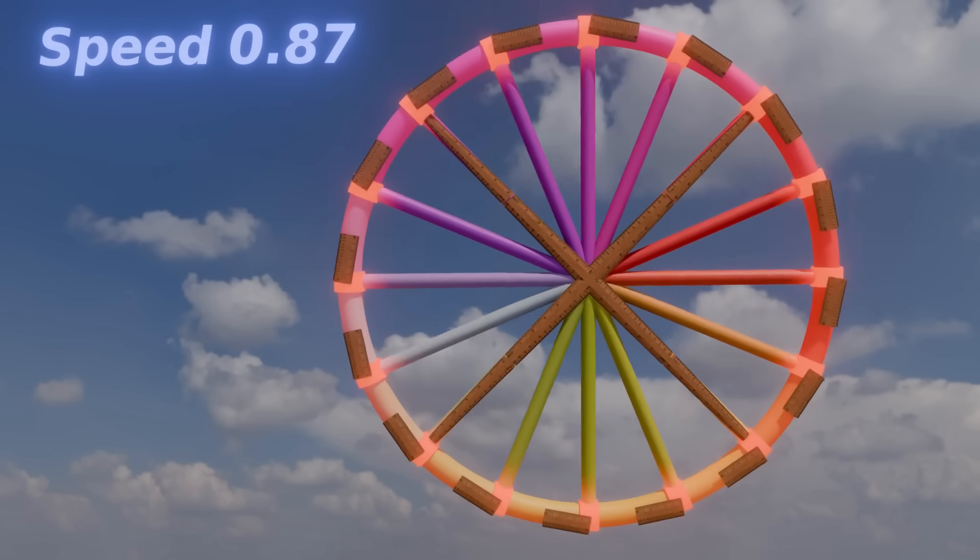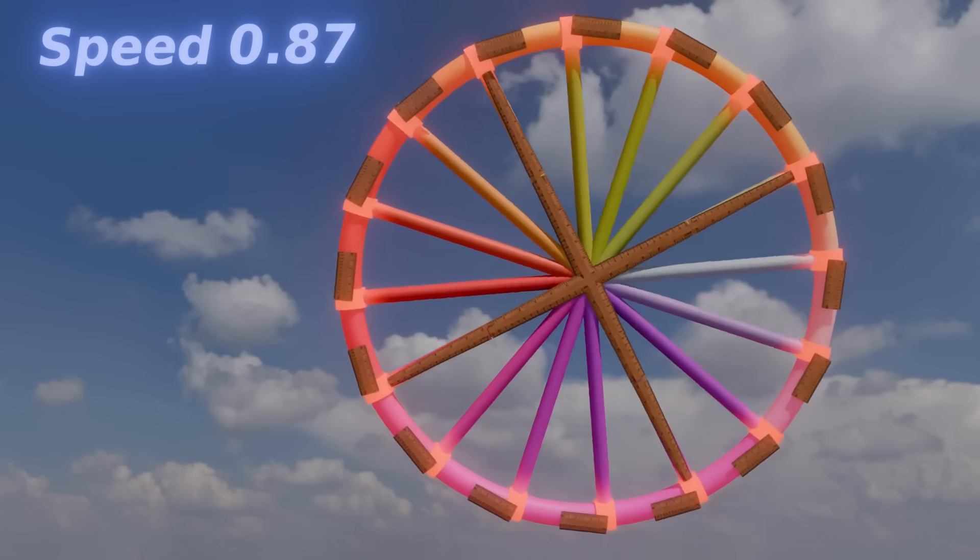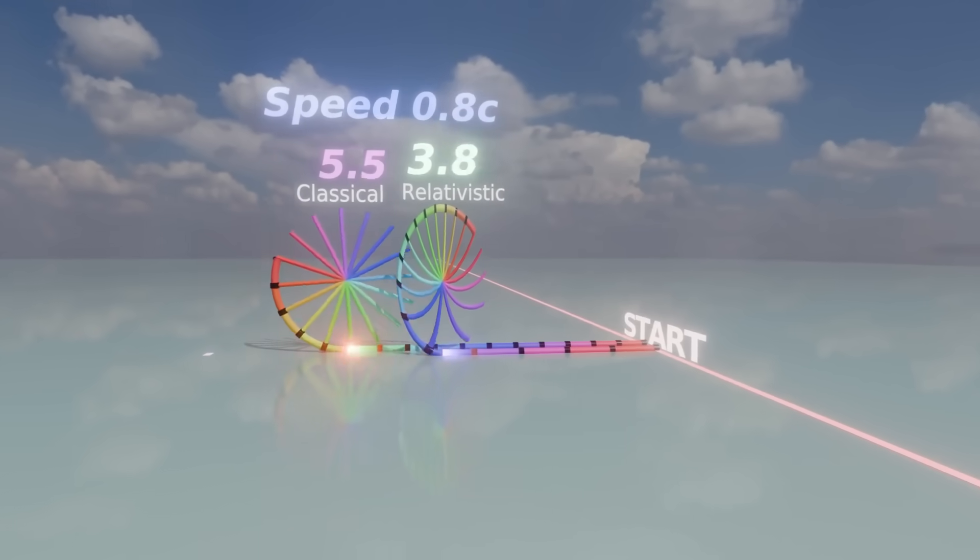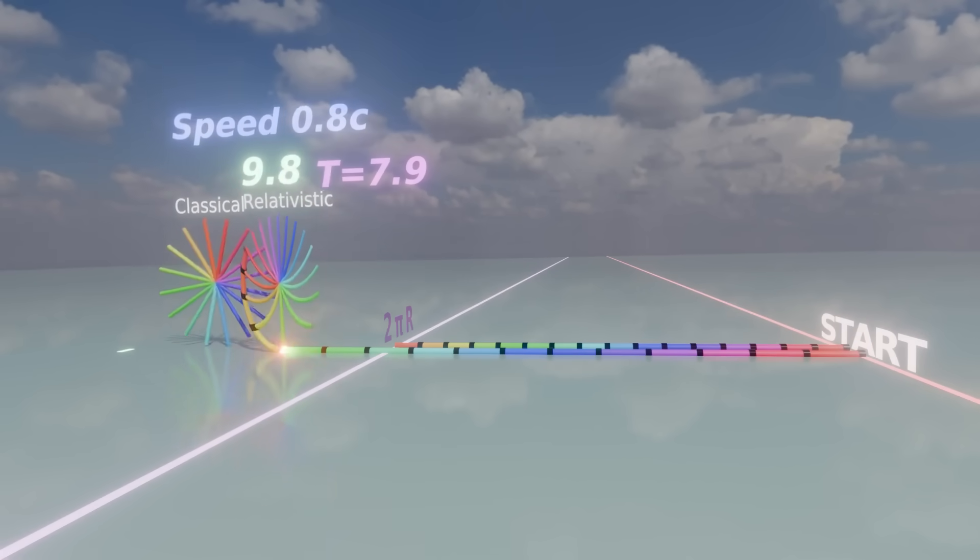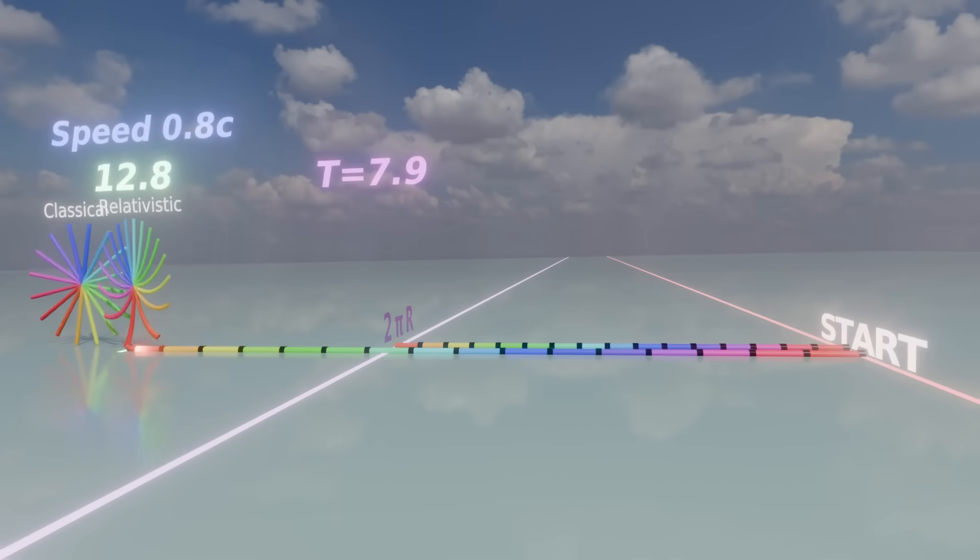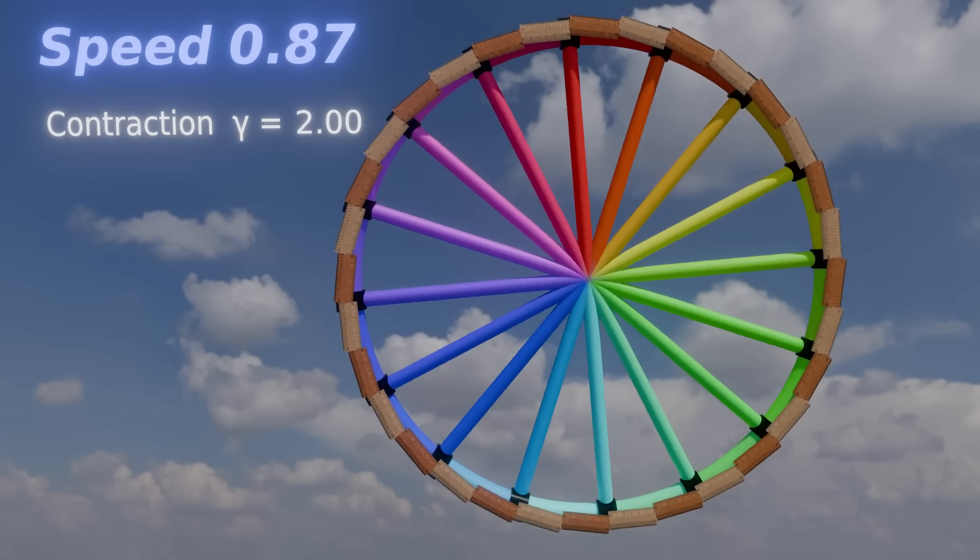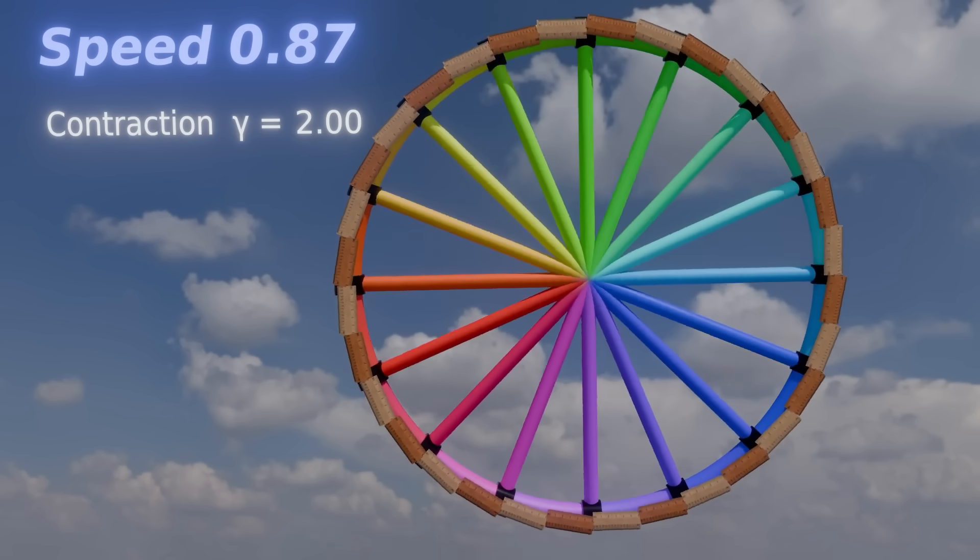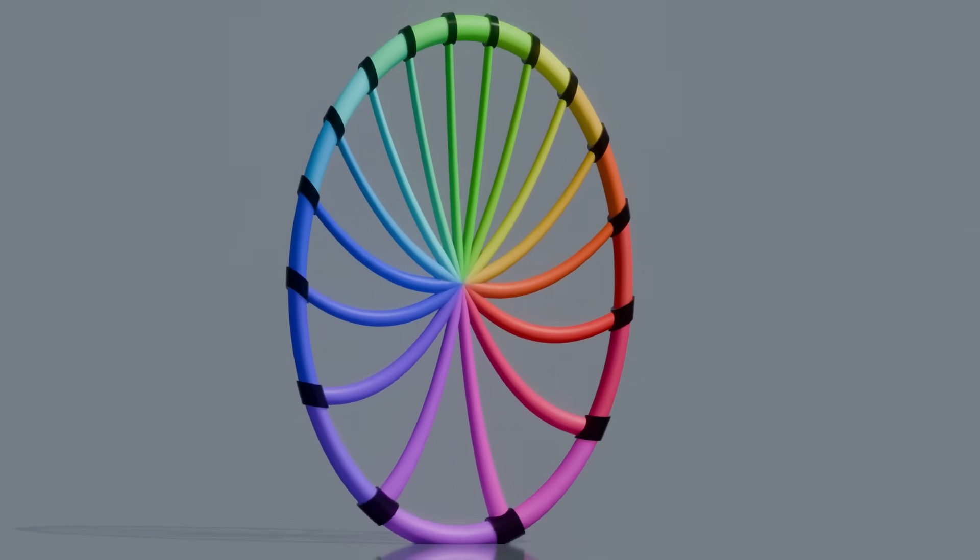To summarize, it is impossible to set an initially stationary wheel into rotation without causing stress forces. But if you have a rotating wheel, its proper circumference is indeed longer than that of a stationary one. This implies that the geometry of a rotating frame is non-Euclidean, but we will return to that in an upcoming video.